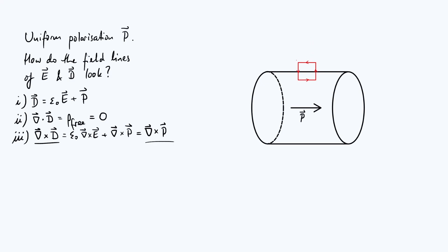Starting with a circulation loop at the top of our cylinder: along the bottom edge of the loop you're integrating in the same direction as P, giving a positive contribution. The vertical edges contribute zero because the line element dl is perpendicular to P, so the dot product is zero. The top edge outside the electret also contributes zero since P = 0 there. So the circulation is positive, and by the right-hand rule the curl vector points out of the screen along the entire top surface.